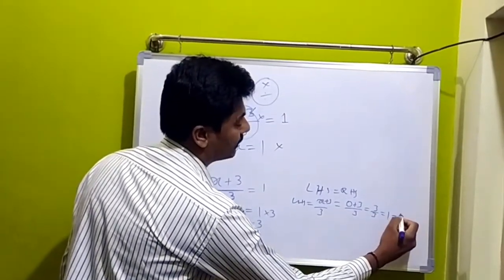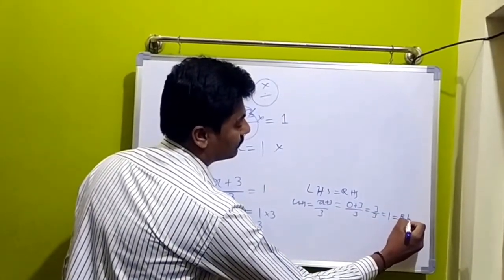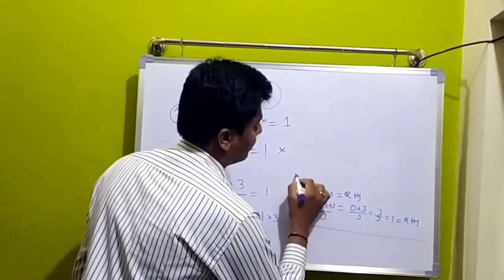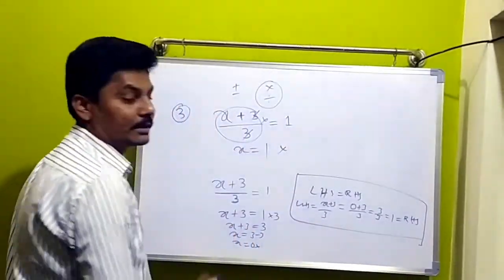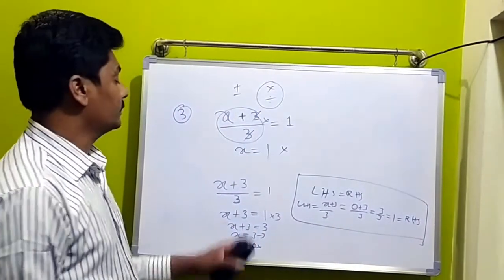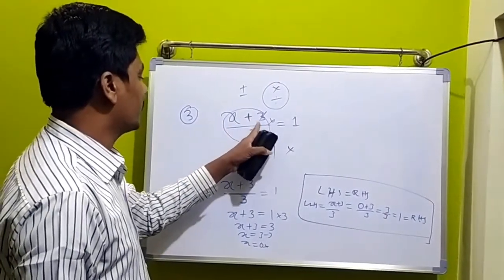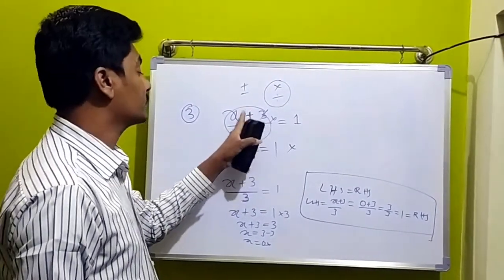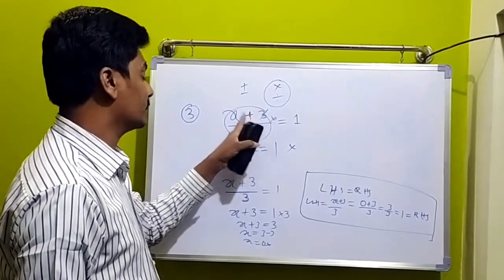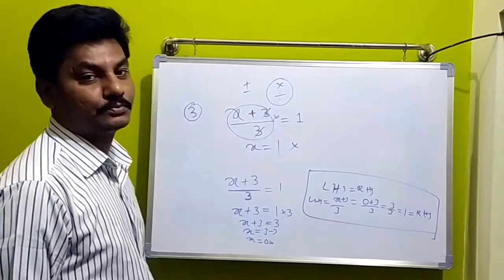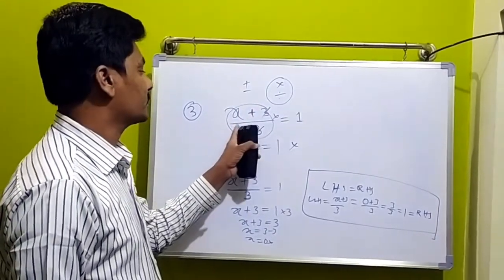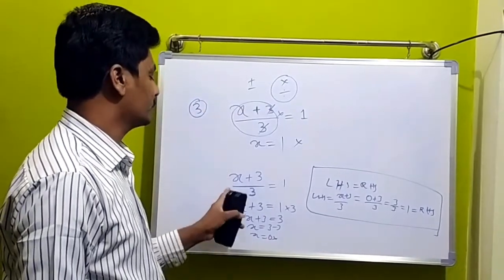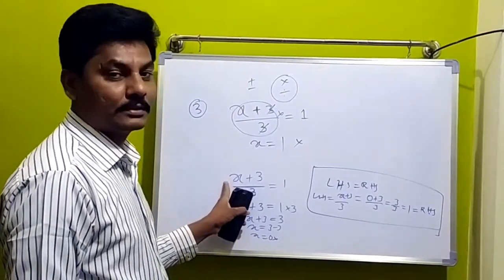If you have RHS, you will get the answer correct. So, this is a mistake. If you have a place 3, you can cancel. If you have a place 3, you can cancel. So, this is a mistake. Now, let's do this — it's easy to study.